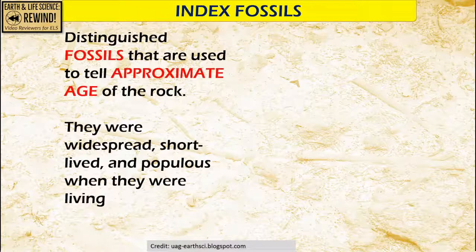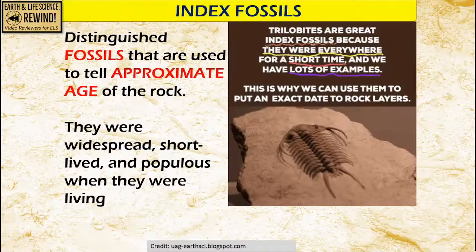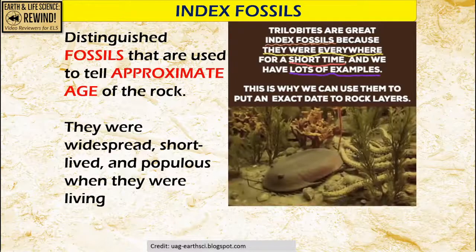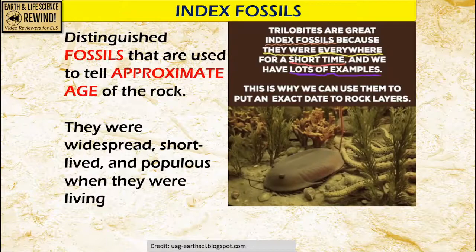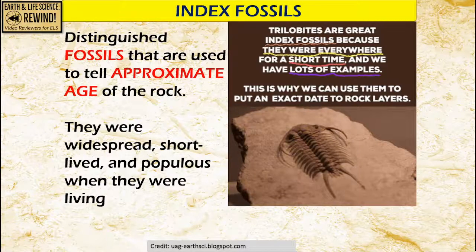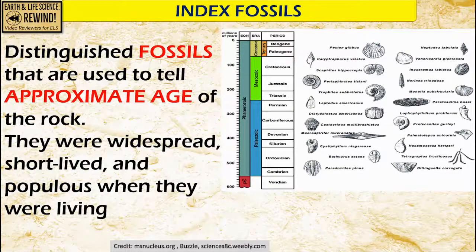The last concept in relative dating is the idea of index fossils. Index fossils are distinguished, widely known fossils that are used to tell the approximate age of the rock. They were widespread, short-lived, and prolific when they were living. When you see fossils like these, it tells you how far back in time those fossils are. For example, our trilobites — trilobites are great index fossils because they used to exist before the dawn of fishes. It was during the Cambrian period wherein trilobites flourished. There are distinguished fossils from era to era and they are used to tell the approximate age of the rock.